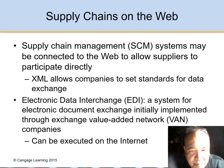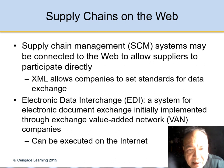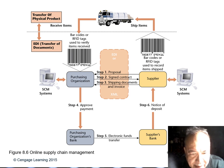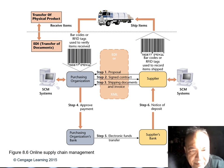Supply chain management systems may be connected to a web that allows suppliers to participate directly. For example, if you buy something from Walmart, the manufacturers supplying to Walmart automatically know you bought an item. When stock goes low, the manufacturer delivers to Walmart right away — so Walmart will always have the product. It's very convenient for the supply chain on the web.